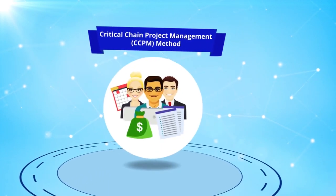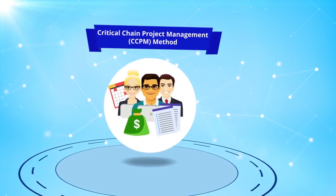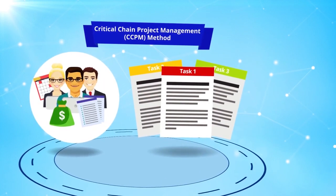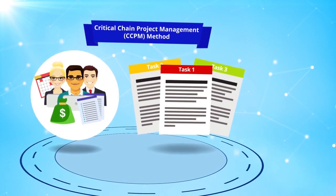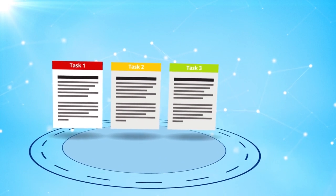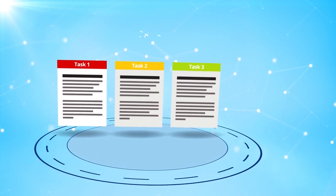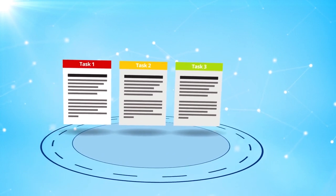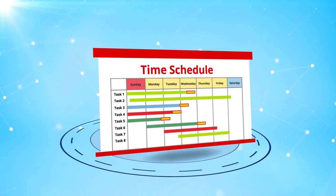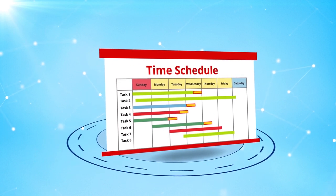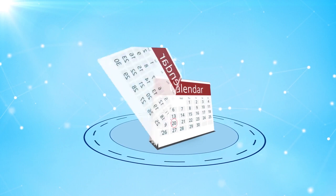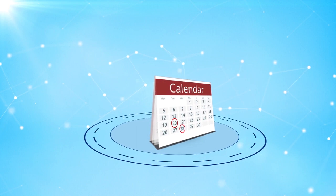Critical chain revolves around the resources needed to complete the project tasks. We create a critical chain by looking at the sequence of the longest series of dependent tasks in our project. Then we add buffers at the end of the project to absorb any delays, which helps protect the project completion date.